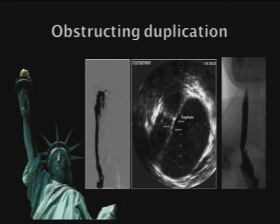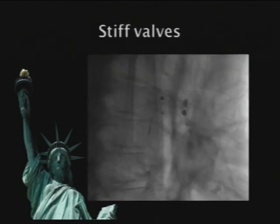The duplication is sitting right here. Whenever that patient would strain or anything, it would compress and collapse the jugular vein. I think it's an important observation.